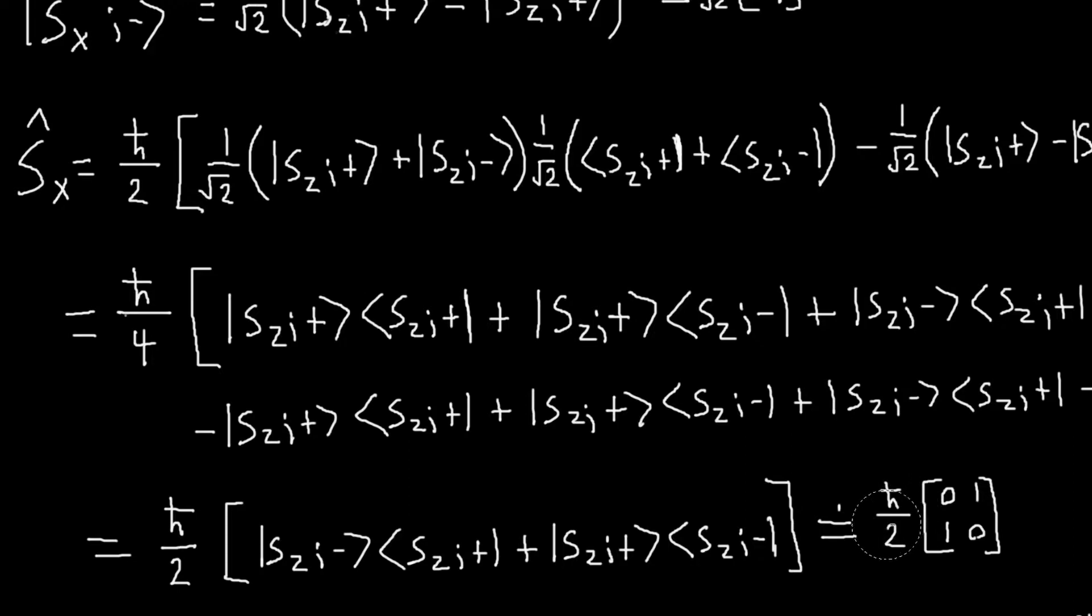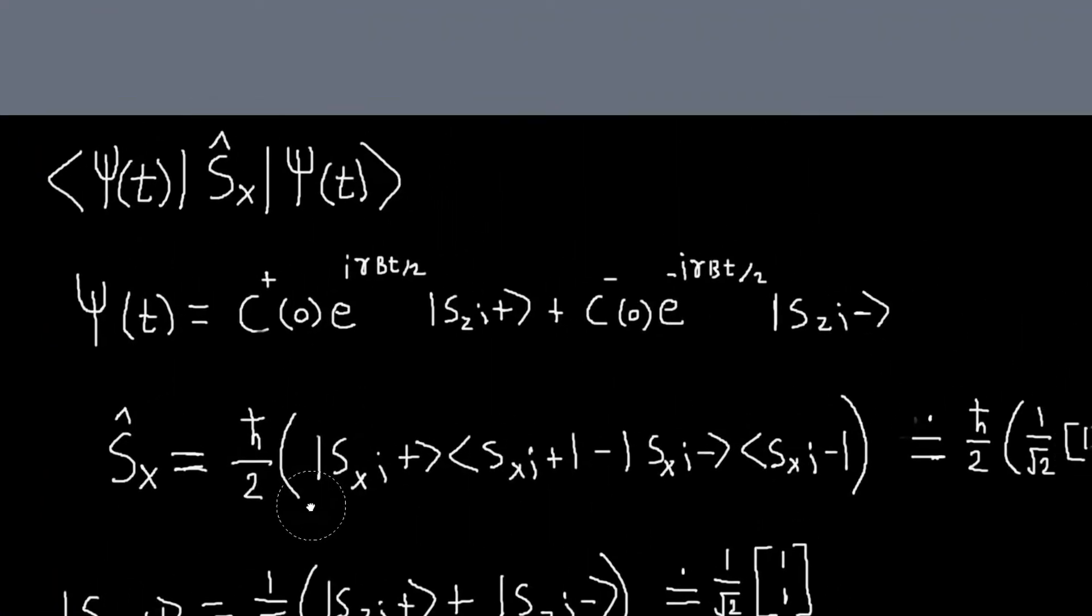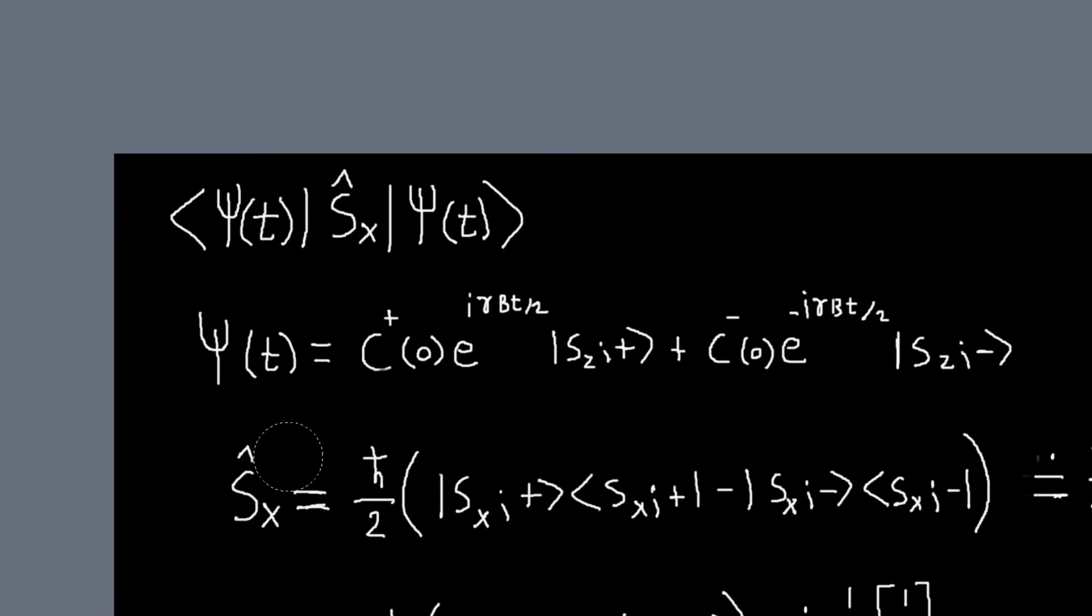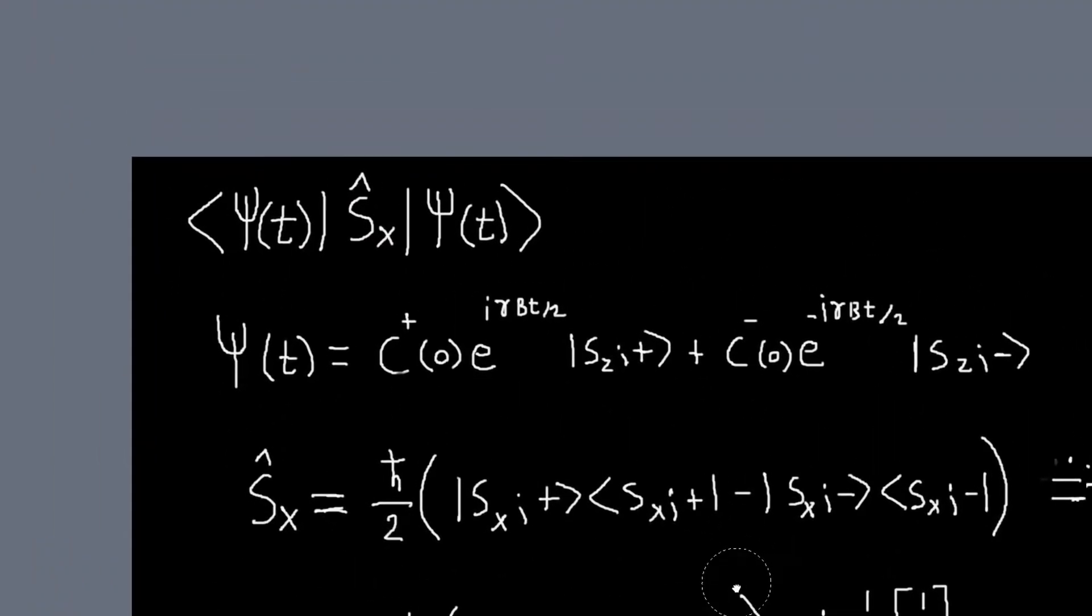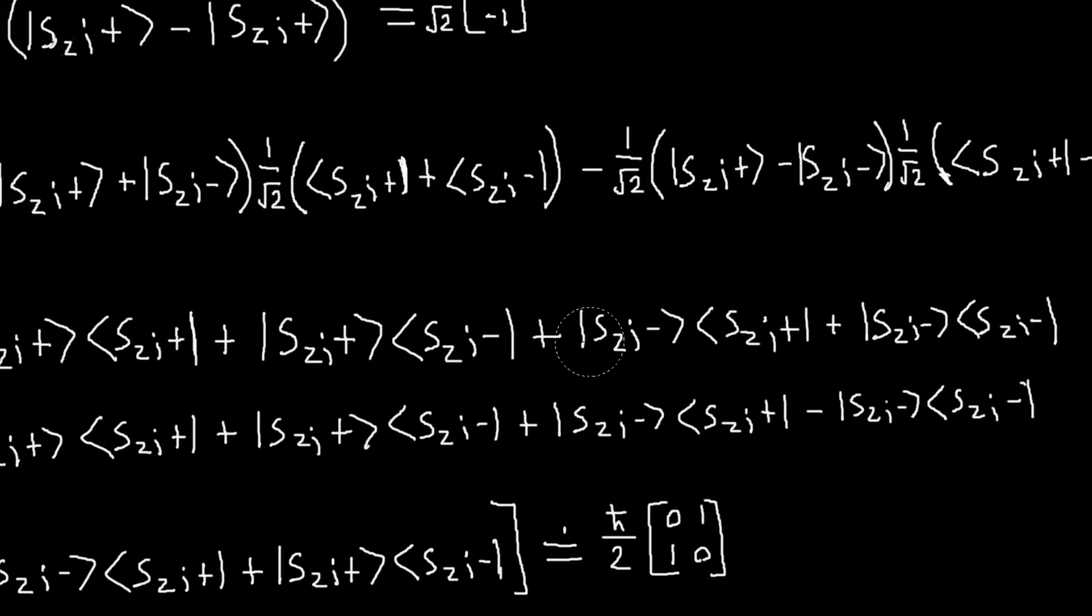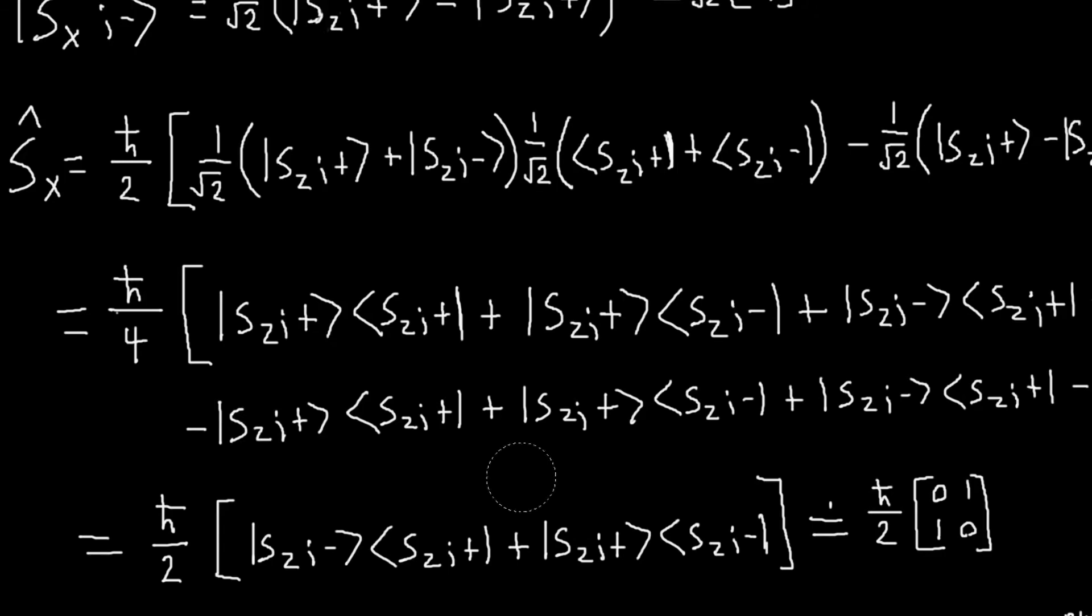This is the matrix I would use to represent my Sx operator in the Sz basis. So in the Sx basis, the matrix I would use to represent my Sx operator would look like ℏ over 2 times 1, 0, 0, minus 1. It would look just like the Sz operator would look in the Sz basis. Hopefully, that's not confusing. But so we have, we've done what we wanted to do, we've converted our Sx operator to, or we've written it in terms of our Sz outer products.